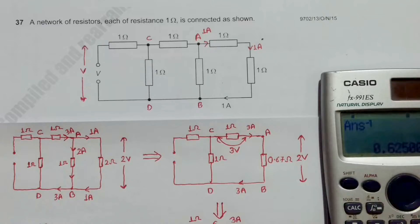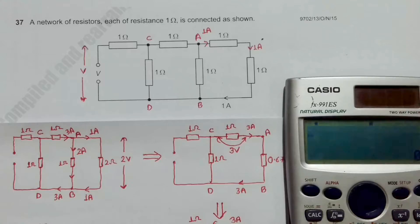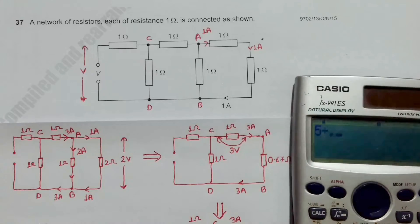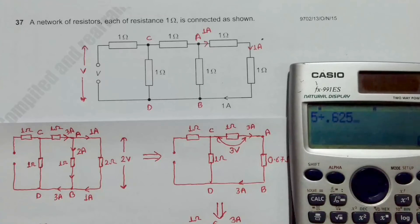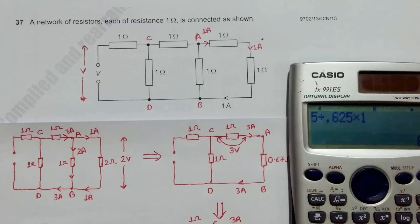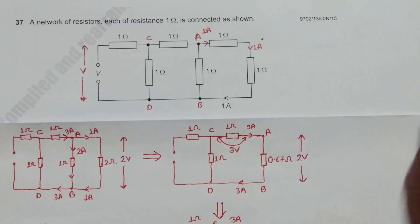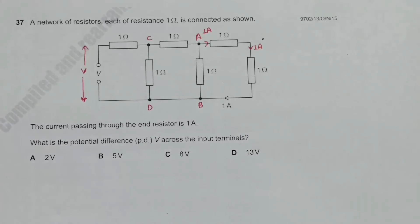This resistor and the outer 1 ohm are in series. If it is 5 volt across CD, then using the voltage divider: 5 ÷ 0.625 × 1 = 8 volt across the 1 ohm resistor. These two voltages add in series: 8 volt + 5 volt = 13 volt. So the PD across the source terminals is 13 volt, which corresponds to answer choice D.